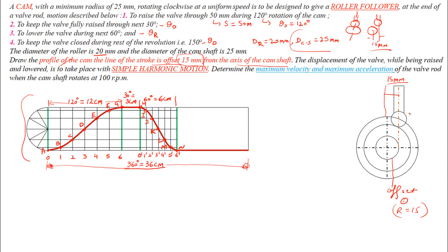To make the cam profile, divide the cam shaft circle into the angle of ascent, angle of dwell, and angle of descent. Take a line from the center of the roller follower towards the center of the cam shaft. The angle of rise is 120 degrees, the angle of dwell is 30 degrees, and the angle of return is 60 degrees. Now divide the prime circle — the 120-degree angle of rise is divided into six equal parts, and the 60-degree angle of descent is also divided into six equal parts.